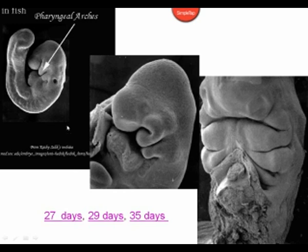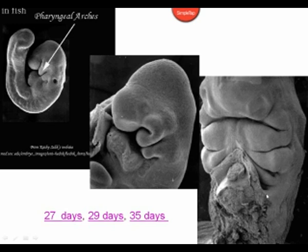Here we're looking at embryos at 27 days, 29 days, and 35 days, and you can see the location of the pharyngeal arches. This would be the first arch, this is the second arch. Now we see the first arch, the second arch, the third arch, and a little bit of the fourth arch.